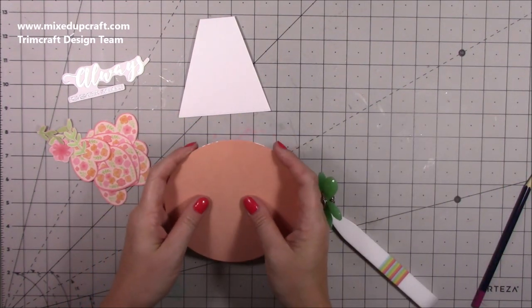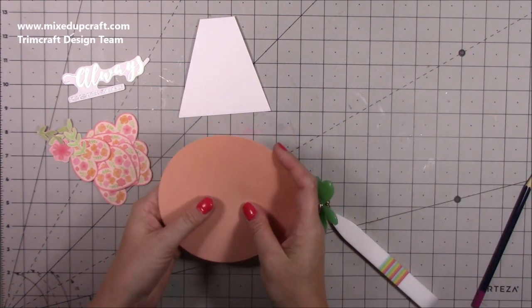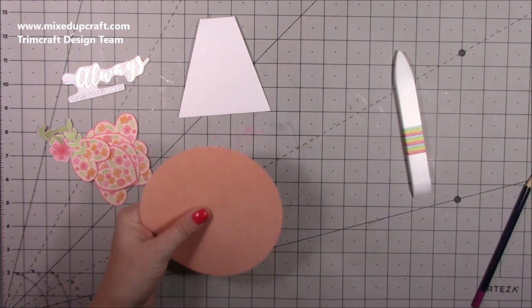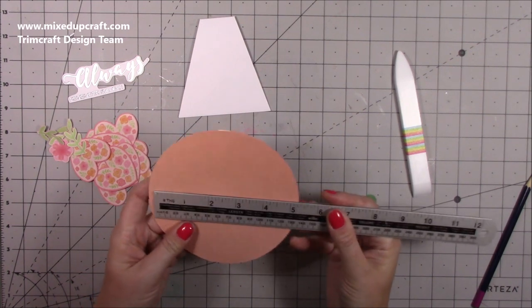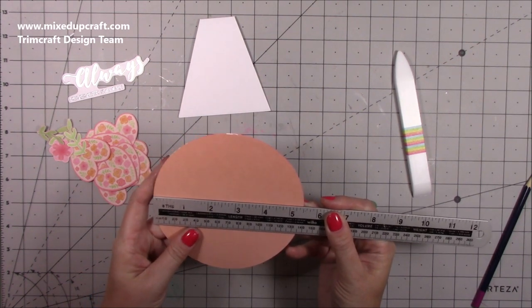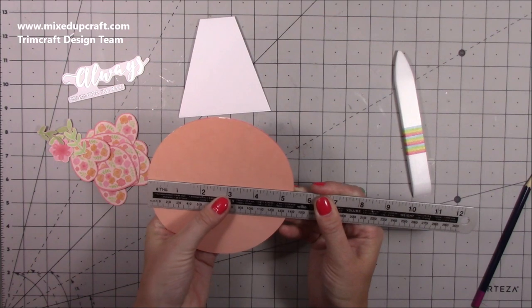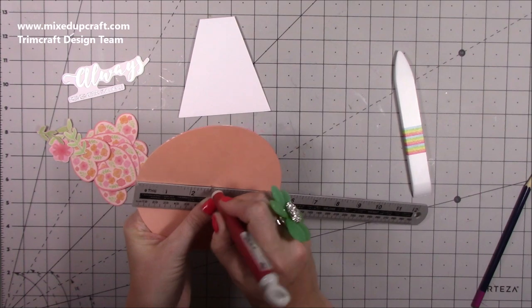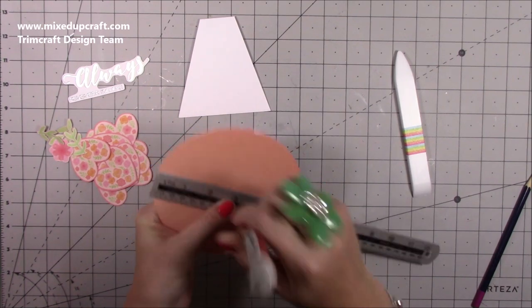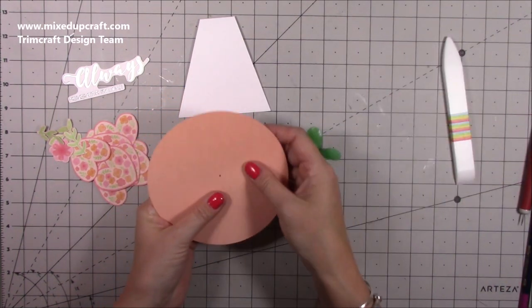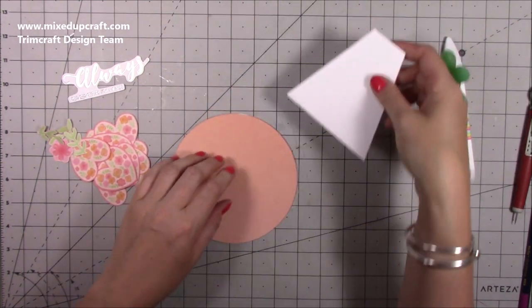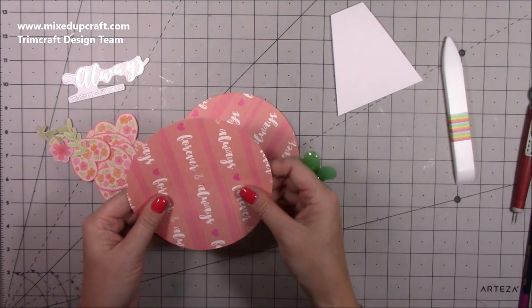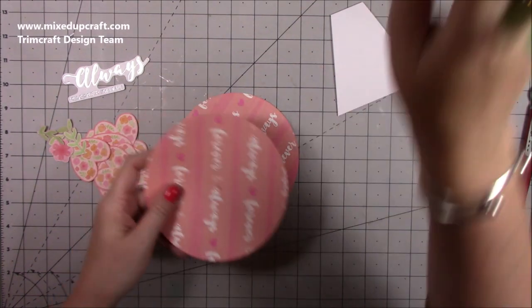So with this piece here, what you want to do, I'm going to keep both of mine together just so it's easier to work with. You just want to mark the center, so I'm just going to grab my ruler. I know it's five and a half, so I'm just going to pop a hole at two and three quarters just using my pokey tool there. Get that done now because now you can see your center point, and then it's easy to add your pattern and everything.